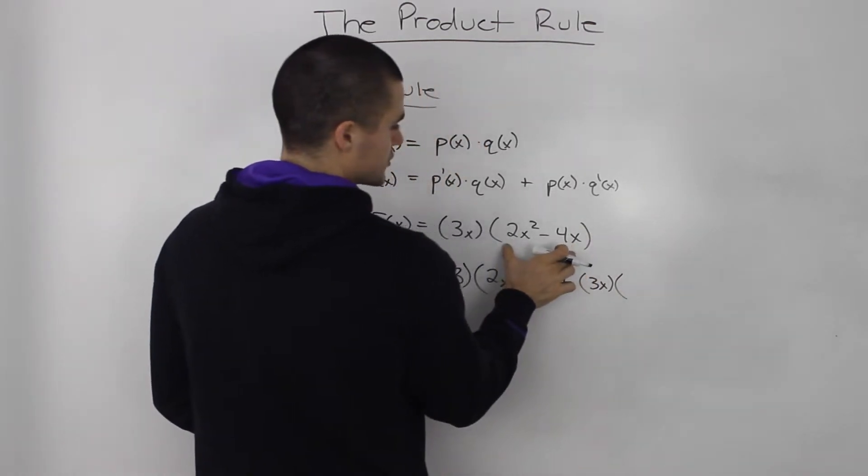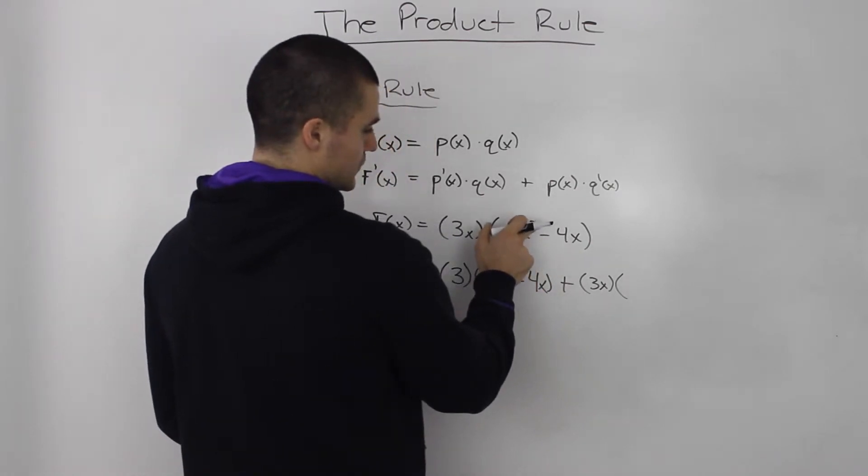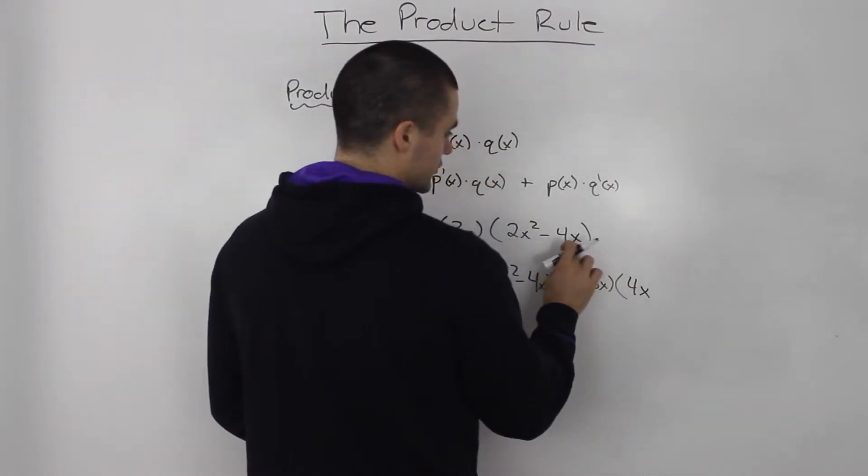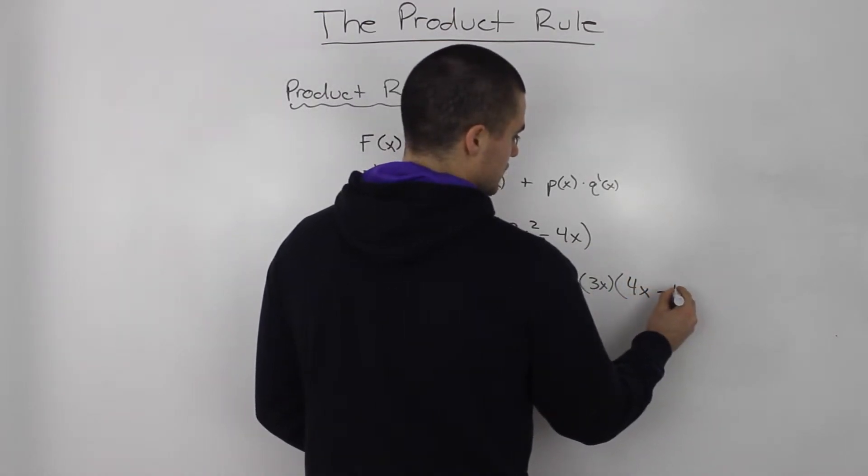And then we take the derivative of the second function. So, the derivative of 2x squared, that's just 4x. And then the derivative of 4x is just 4.